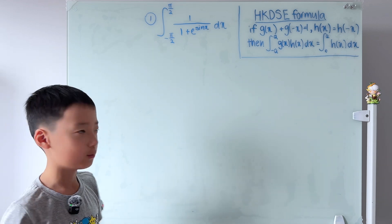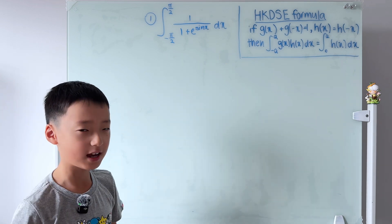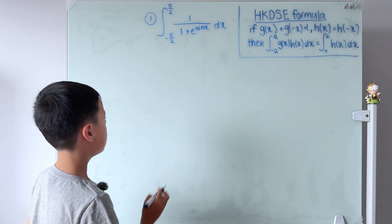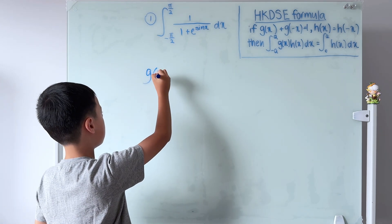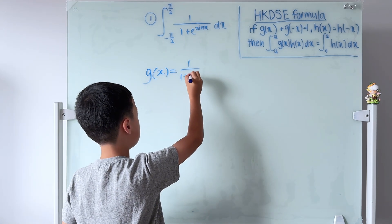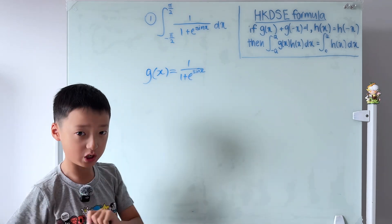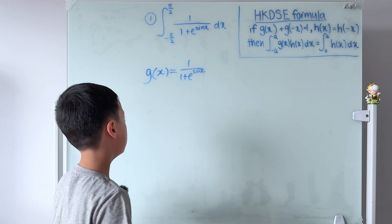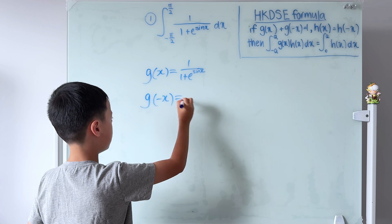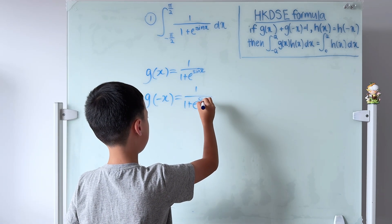We have to figure out what g(x) and h(x) will be. I think g(x) will be the whole thing. Let's test that: if g(x) = 1/(1 + e^(sin x)), then we need to prove that g(x) + g(−x) = 1. So we derive g(−x), which is 1 over (1 + e^(sin(−x))).